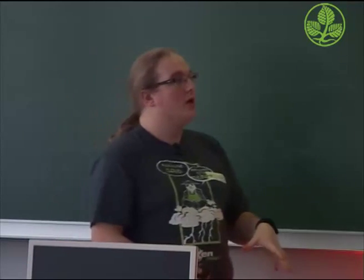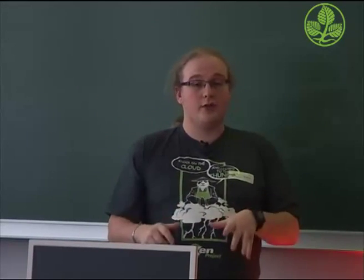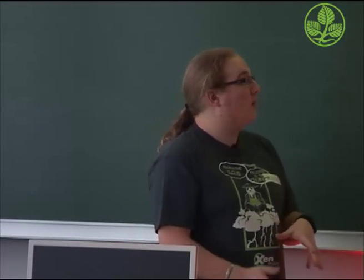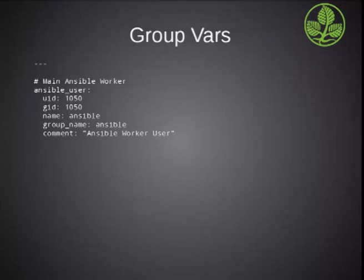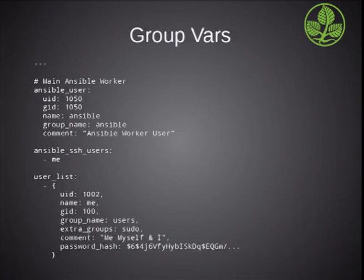So group variables are generally used for things that aren't specific to a host, more likely to be to a group or could just be for basic configuration. So for example, I have the definition for the Ansible user in there, the UID, GID, name, group, comment, the SSH users who have access to that Ansible user, and a user list with everything including the password hash. That's not a complete password hash. The full one is in the Git repo if you want to try and hack it. It's ABC123.